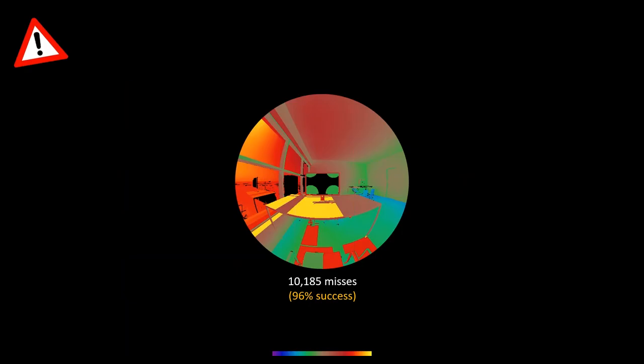Unfortunately, using k-means clustering means the scene may not be fully covered. In one image, points not covered by any irradiance cache value are colored black. The good news is that 96% of the image is correctly colored—but that 4% that isn't is enough to make the image unusable as a simulation result.